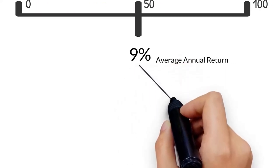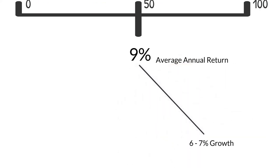Here's how it works. Over the very long run, 6 to 7 percent comes from growth and 2 to 3 percent comes from dividends.